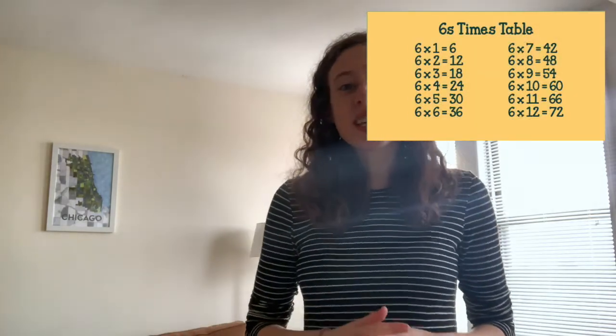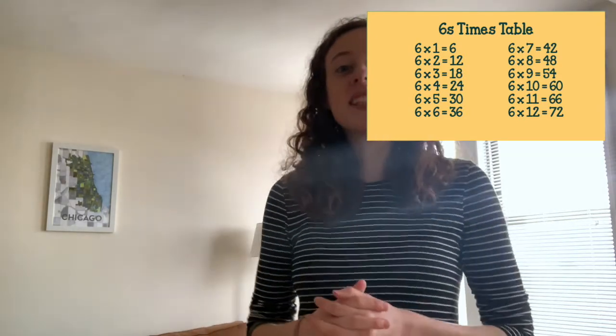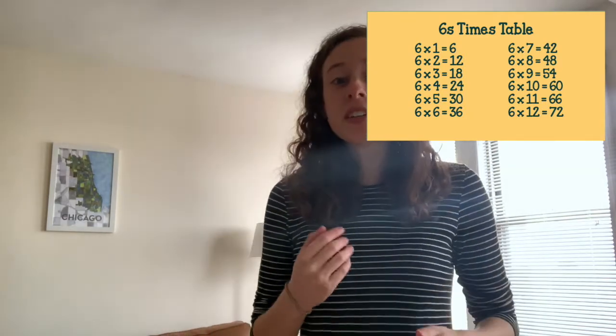I'll do it one more time, it's a little bit long. Six, twelve, eighteen, twenty-four, thirty, thirty-six, and forty-two. Forty-eight and fifty-four, sixty, sixty-six, and seventy-two. Six, twelve, eighteen, twenty-four, thirty, thirty-six, and forty-two. Forty-eight and fifty-four, sixty, sixty-six, and seventy-two.